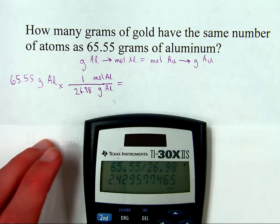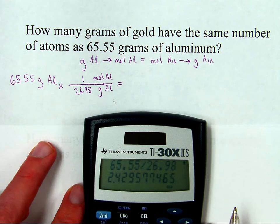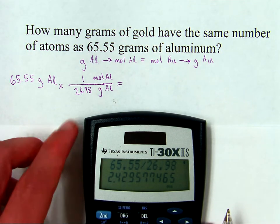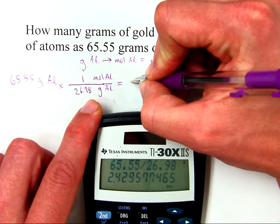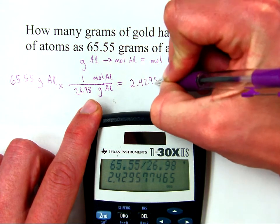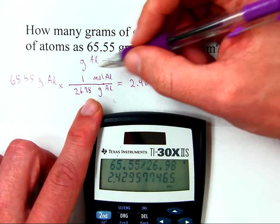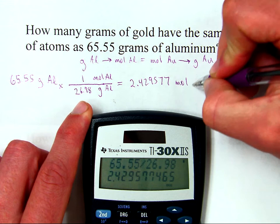That gives an answer of 2.42, all that long business. So not done with the calculation yet, not rounded for significant figures yet, do not round until the end. So I'm going to write out most of these digits anyway. 2.429577, yeah, that'll do. Let's see, grams cancel grams to give moles. Moles of aluminum.